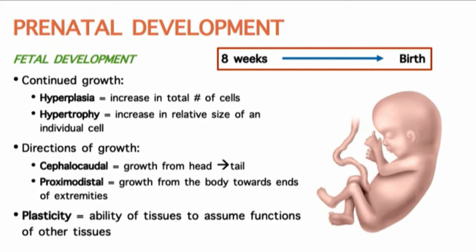Directions of growth generally follow two types of patterns. The first is cephalocaudal — 'cephalo' refers to the head, 'caudal' refers to the tail — so growth proceeds from head to tail. We also have proximodistal growth — 'proximo' meaning towards the root of a limb, 'distal' meaning away from the limb — so limbs grow from the core outward. For example, the shoulder and upper arm develop before the forearm and fingers. This makes sense because the brain is our most important organ and nervous connections need to develop first.